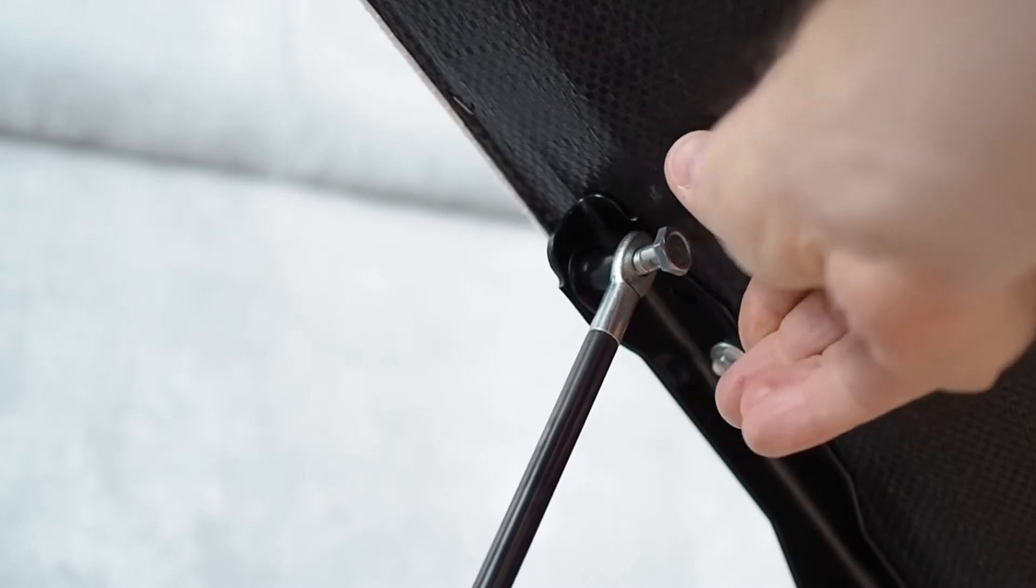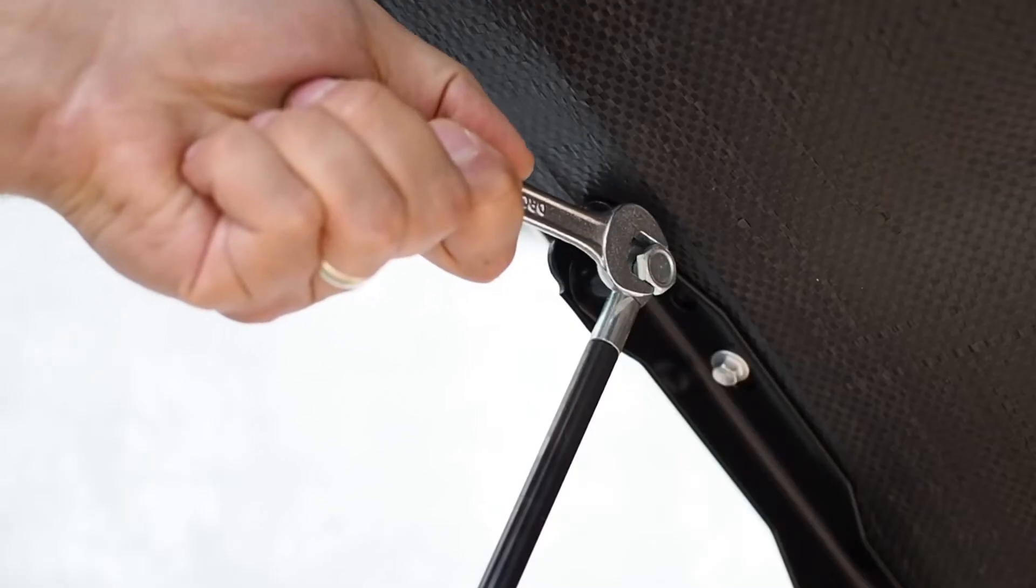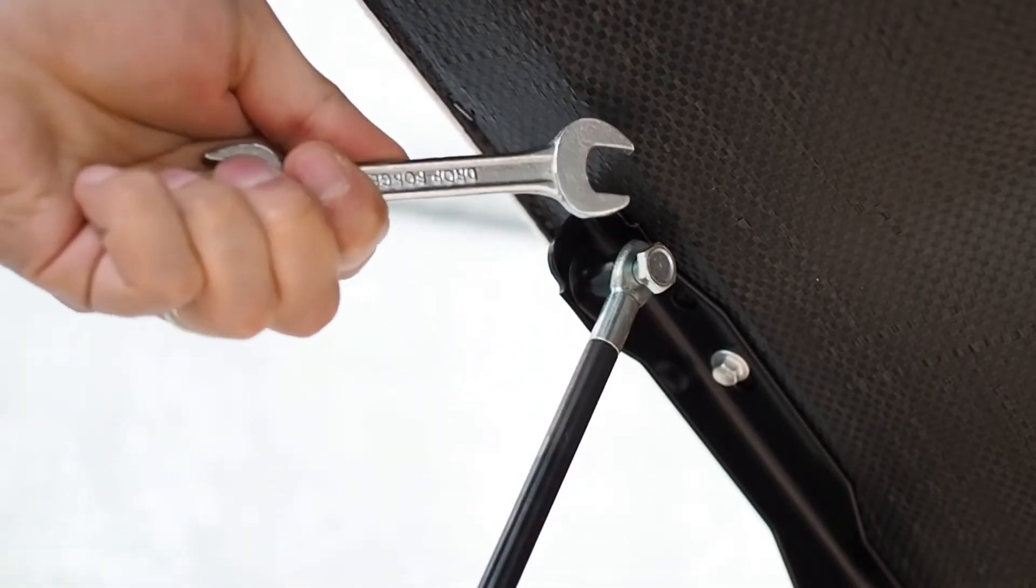Remove the nut from the upper hinge mechanism. Pivot the gas strut upwards and position it over the thread from which you have just removed the nut. Place the nut back on the thread and tighten it up with your spanner.